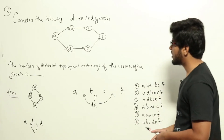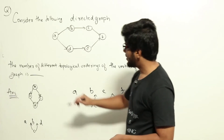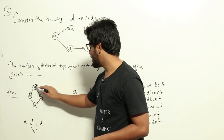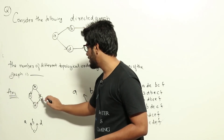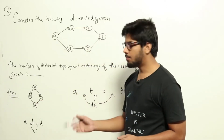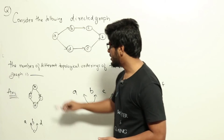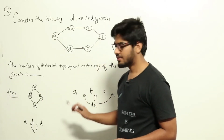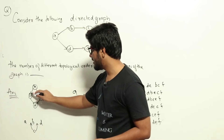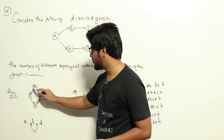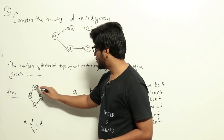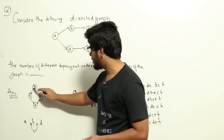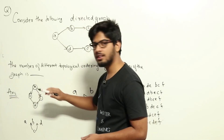What is topological ordering? If we have a graph where A is connected to B, A is connected to C, B is connected to D, and C is connected to D, a topological ordering is some ordering of the vertices A, B, C, D such that if there is an edge between two nodes, the source node should appear before the destination node. So A has an edge with B, meaning that in the ordering A should appear before B.